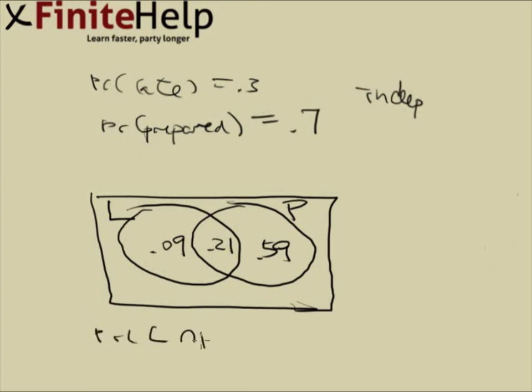Probability of late and prepared is 0.21. And that's your answer.